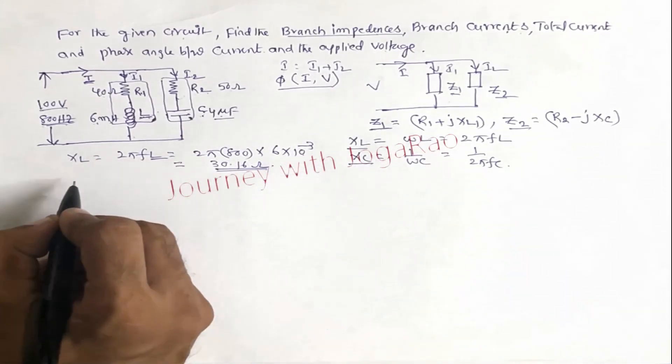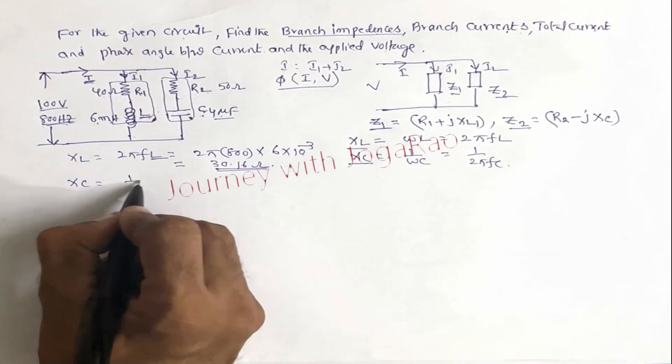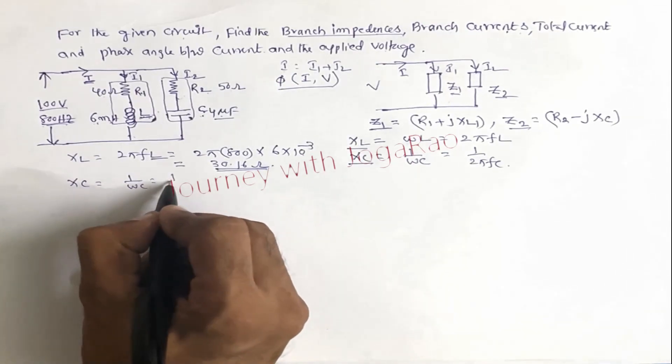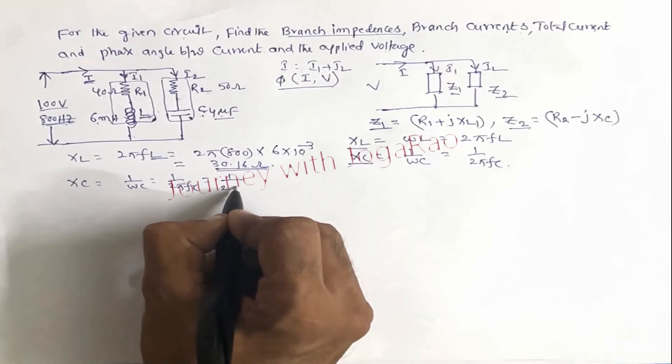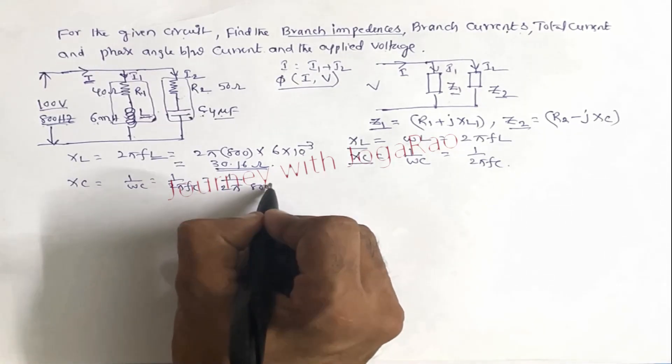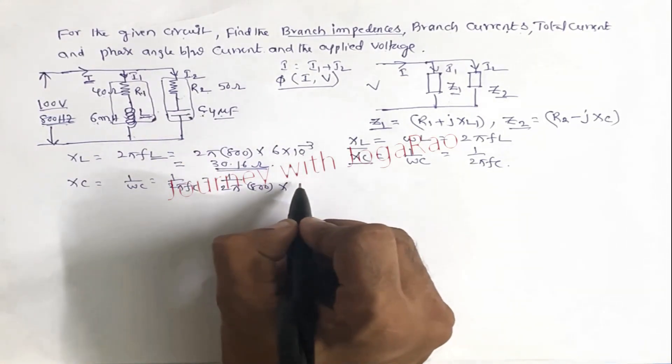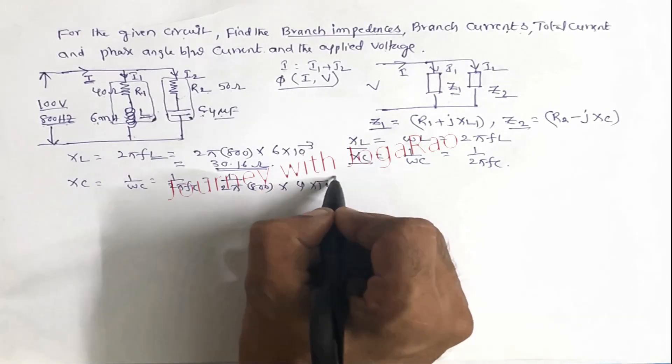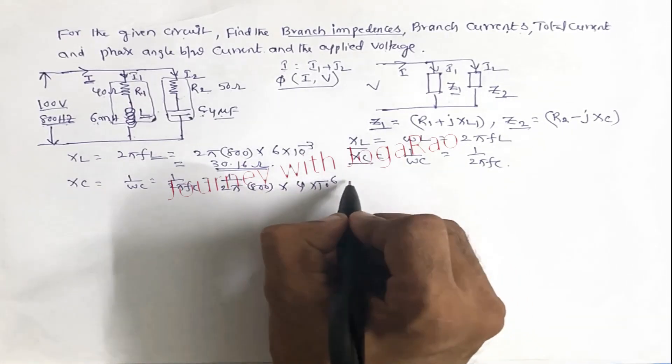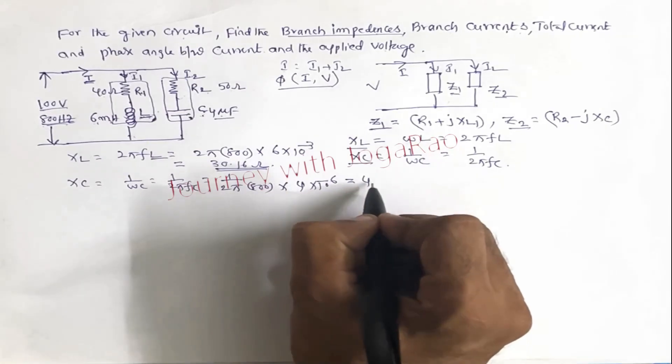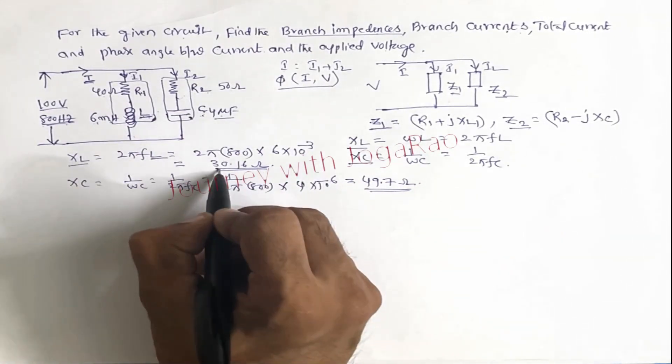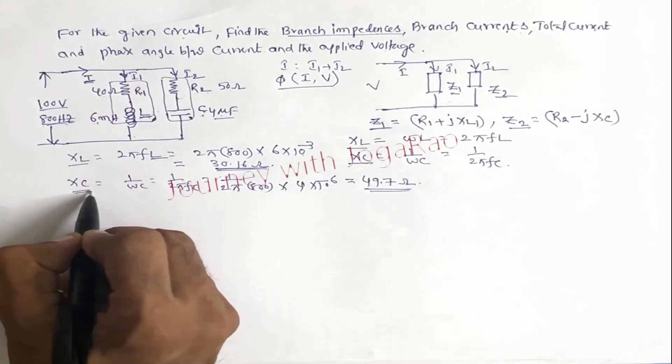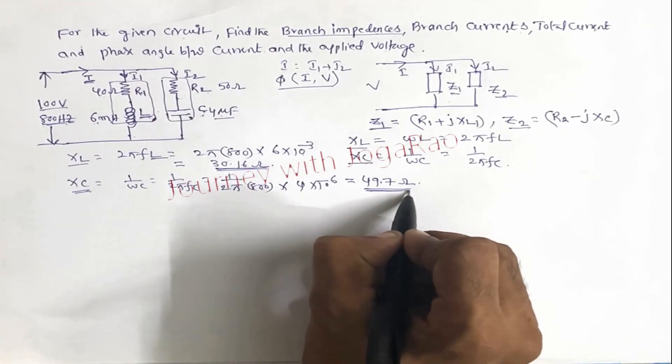And similarly xc find out. xc is equal 1 by omega c. That is equal 1 by 2 pi f C. That is equal 1 by 2 pi, frequency 800, into capacitor is 4 into 10 power of minus 6 farads. Then simplify this. That is 49.7 ohms. So xl is equal 30.16 ohms, xc is equal 49.7 ohms. Inductive reactance and capacitive reactance.